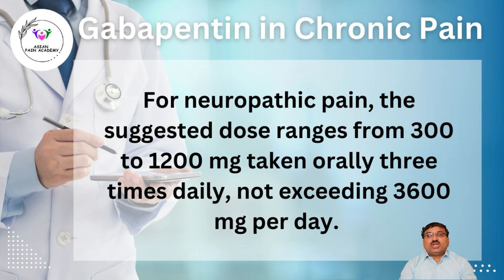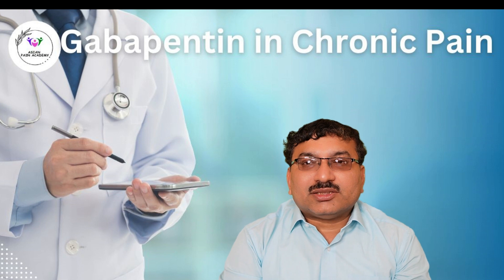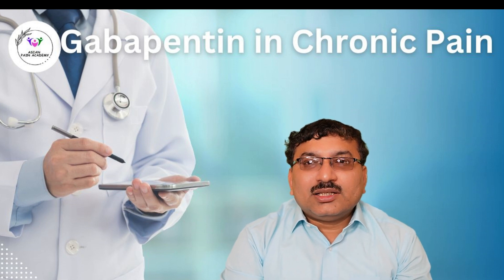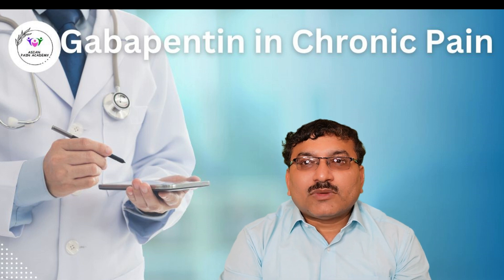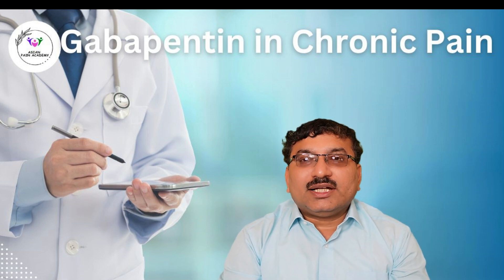Regarding the dosage of Gabapentin, it usually starts with a lower dose. The recommended initial dosing is 300 mg at bedtime, then gradually increased. For Indian patients, we usually go up to 900 to 1200 mg. However, studies show that up to 3600 mg of Gabapentin can be given depending on the condition. We should always give the minimum effective dose. If the patient is taking Gabapentin for 8 weeks with no response, the drug can gradually be tapered off.